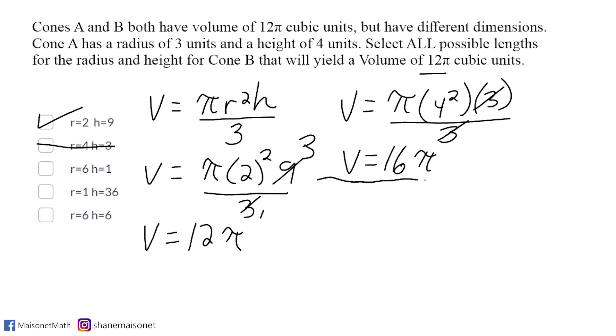Let's plug in the next pair. We have a radius of 6. We're going to take 6 and square it and multiply by a height of 1 and divide by 3. When we do that, we have 36 on top divided by 3, which is 12. So this does make 12π. This combination would make a volume of 12π.